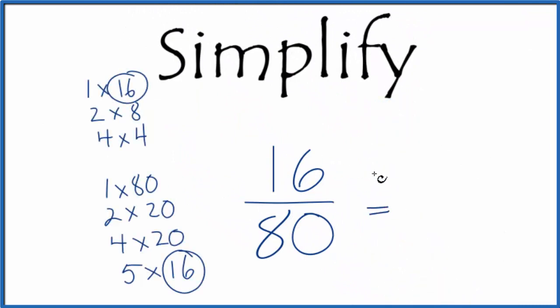I can divide the top by 16. 16 divided by 16 is 1. 80 divided by 16 is 5. So that's where we get the 1 5th from that we got before.